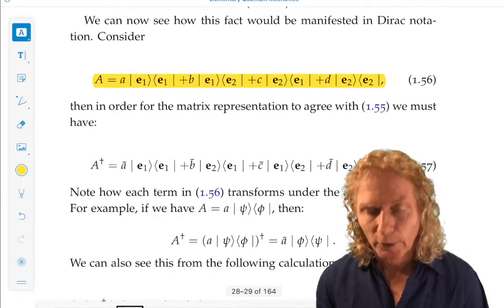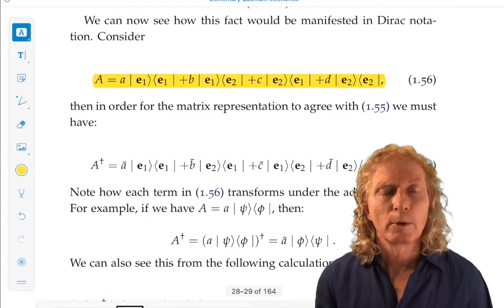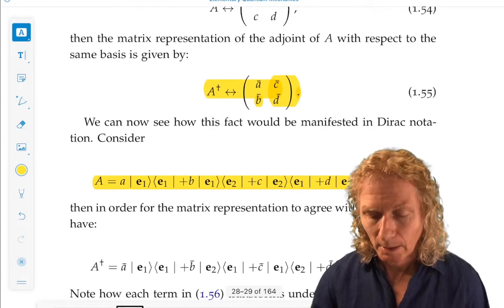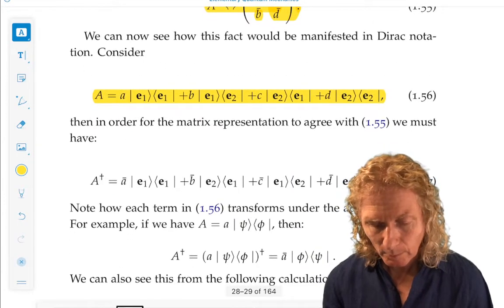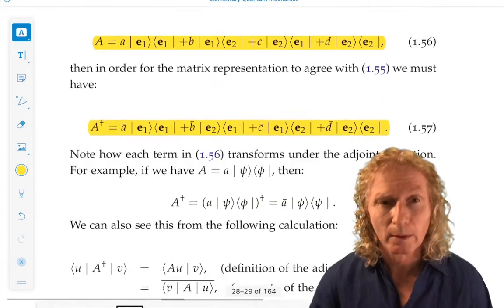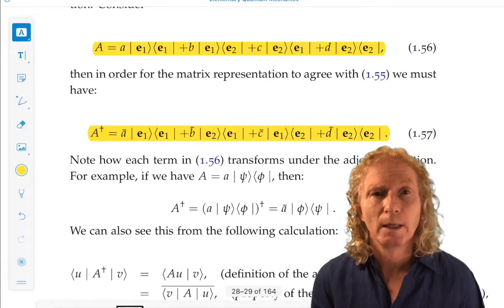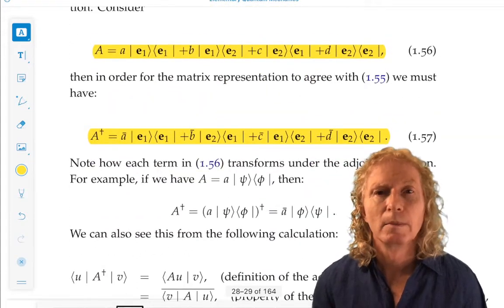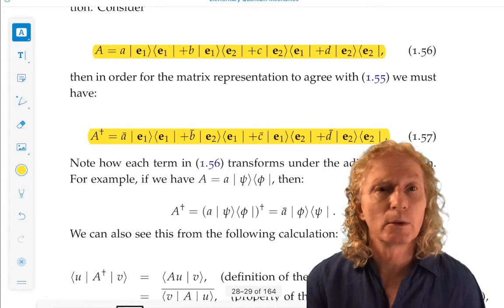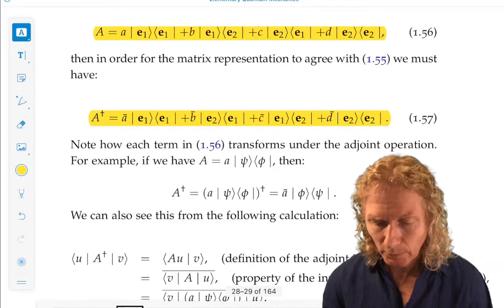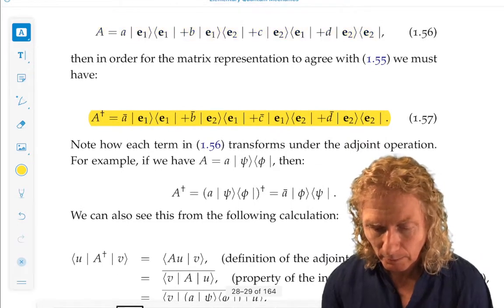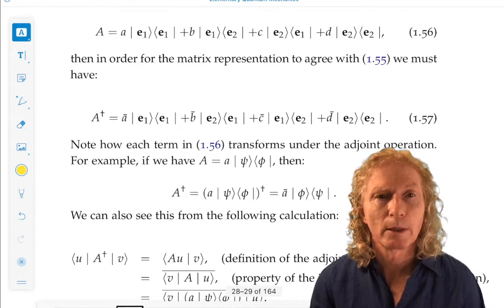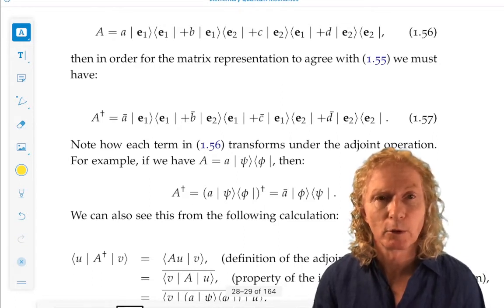What would be the representation of the adjoint whose matrix representation is given here in Dirac notation? We can compute the matrix elements in exactly the same way. How does equation 1.56 and 1.57 relate to each other? You can see that the structure is, you go from 1.56 to 1.57 just by reversing the Bra-Ket pairs and taking the complex conjugate of the coefficients.